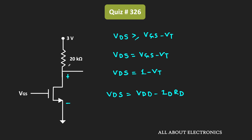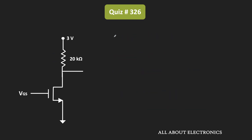Assuming the drain current Id is in mA, we can say that this voltage Vds is equal to 3V - 20 times Id. So at the edge of saturation, Vds will be equal to 1 - Vt. If we equate these two expressions, then we can say that 1 - Vt equals 3 - 20 times Id.